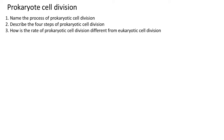This is a revision video on prokaryote cell division — three revision questions to do, so pause and complete the questions, then we shall go through the answers. The first question: name the process of prokaryote cell division. It is binary fission.